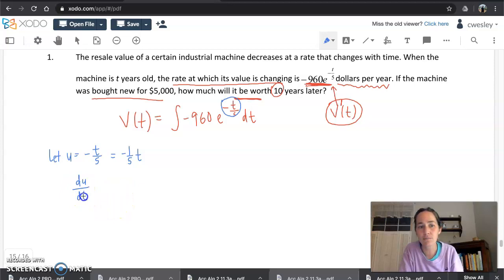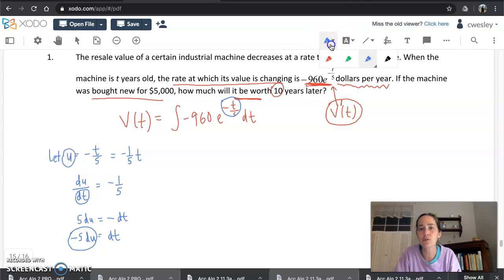And negative t over 5 is otherwise known as, I always like to see these with the constant separate from the variable, negative 1/5 t, because we're about to take a derivative, du/dt. This is a little different. Usually we've got a du/dx over here. This is the first page where we're using other variables like t's, you gotta forgive me for that. But that would be the rate of change in u with respect to time. So a derivative should just be that constant, negative 1/5. And let's solve this for dt. Let's get dt by itself. So 5 du equals negative dt. And you get negative 5 du equaling dt.